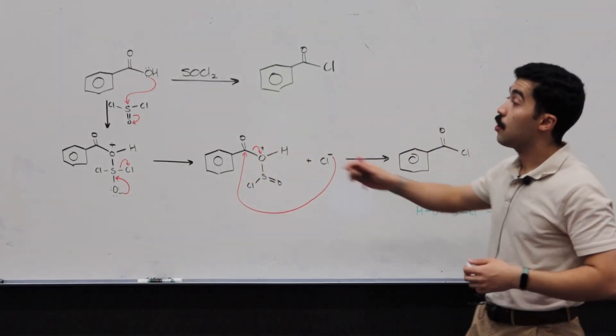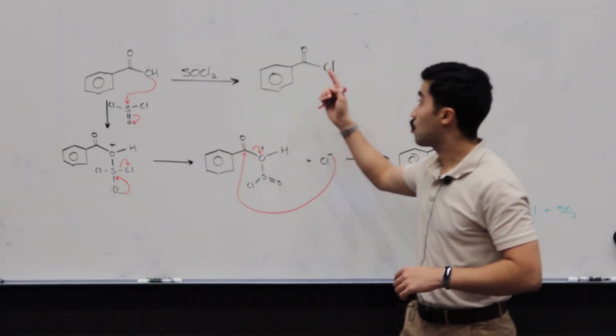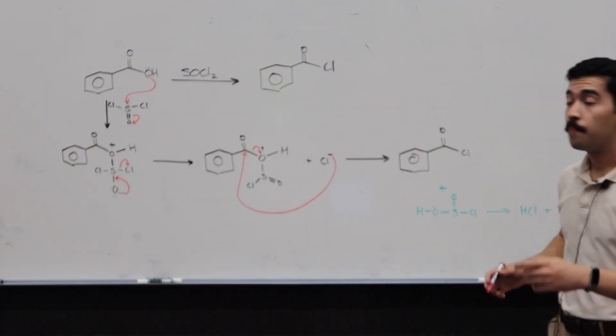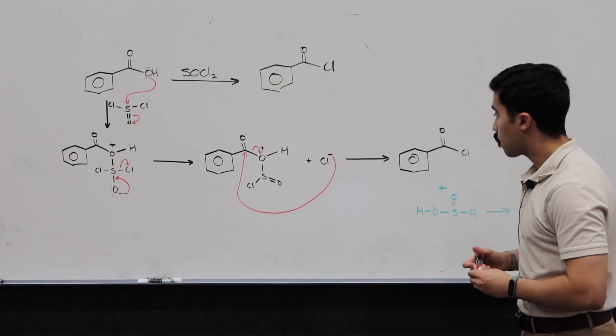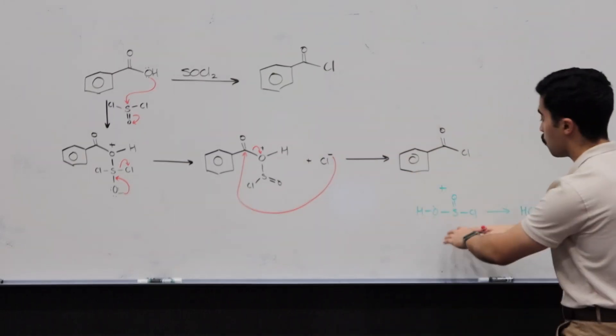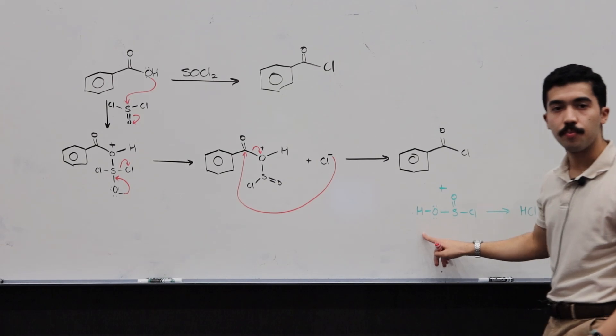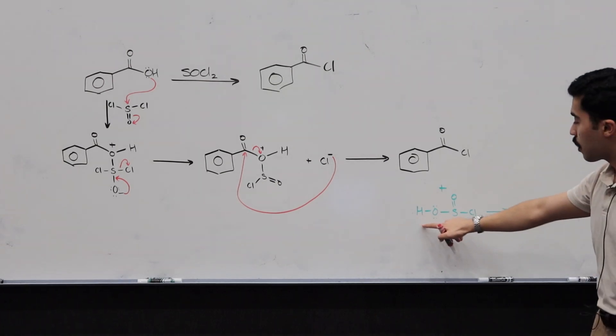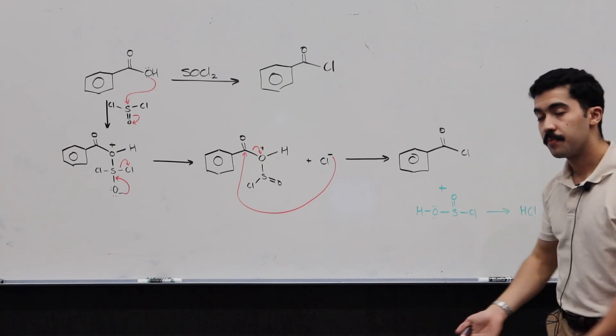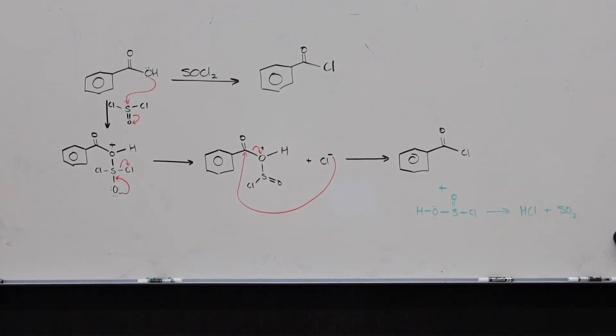Or more generally, we can convert carboxylic acids into acid chlorides using thionyl chloride as our reagent. Now, just a minor side note in terms of what happens with this group over here. So this group over here is going to break down from this product to form HCl and SO2 gas that essentially evaporates or is released when you run the reaction. So this is sort of a side note.